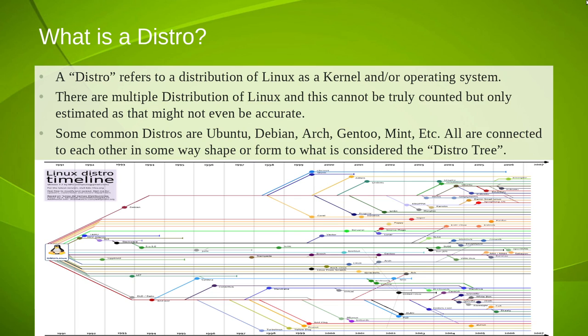As you can see right here, we have what is referred to as the Linux distribution tree. This goes from 1991. We can see a major development with Debian in 1993. The timeline shows GNU slash Linux in 1991, although that's just not entirely accurate. This goes all the way to early 2007, or technically just late 2006, and there are many more operating systems that have been released since then.